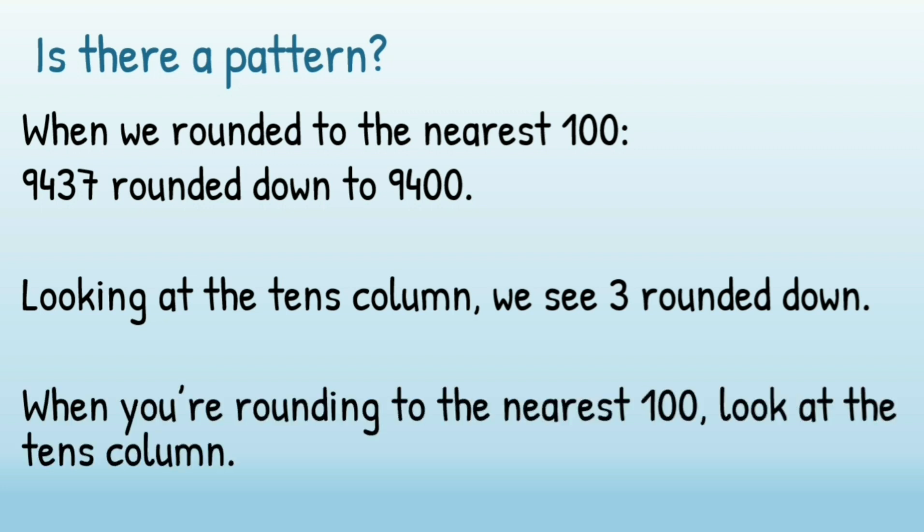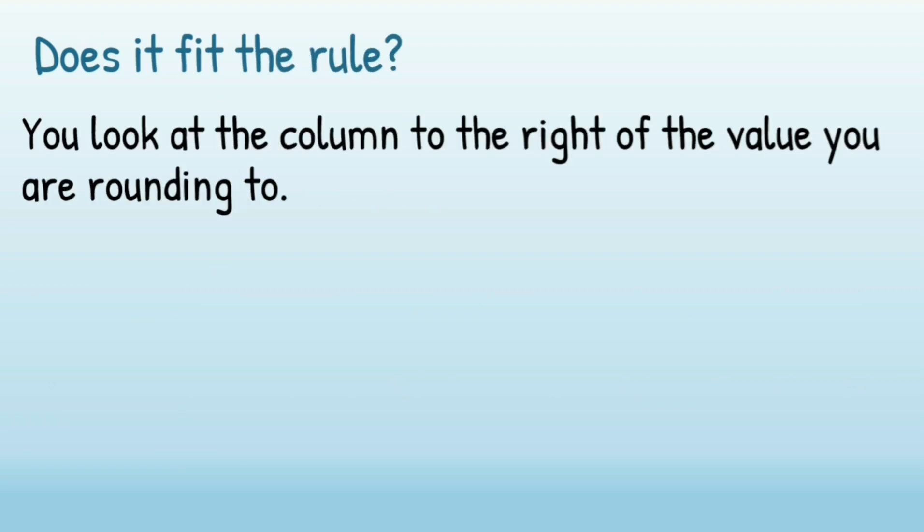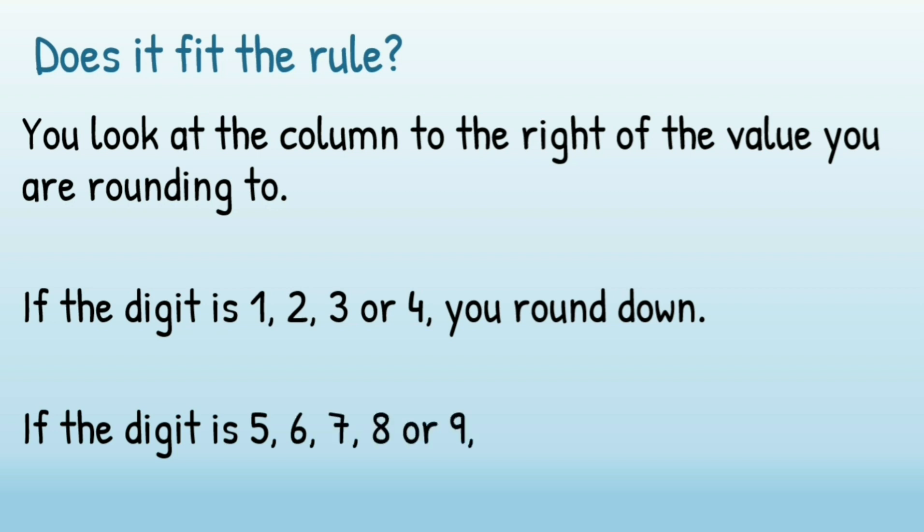When you're rounding to the nearest 100, you look at the 10s column. Does it fit with the rule? It does. You look at the column to the right of the value that you're rounding to. If the digit is 1, 2, 3, or 4, you round down. If the digit is 5, 6, 7, 8, or 9, you round up.